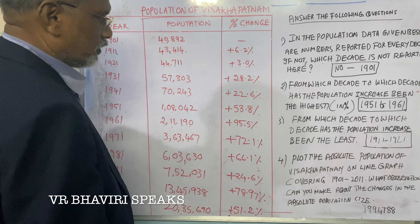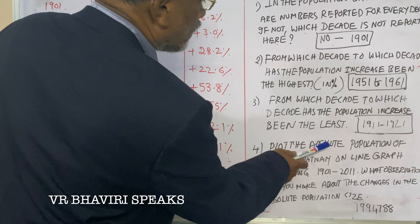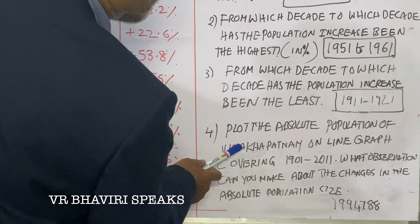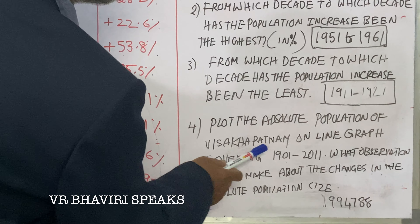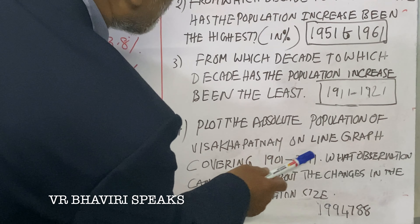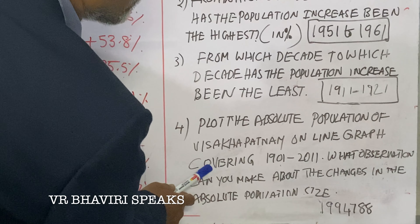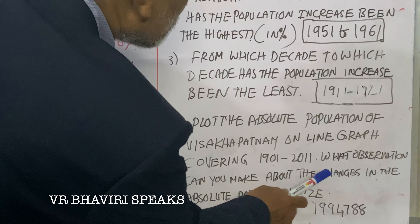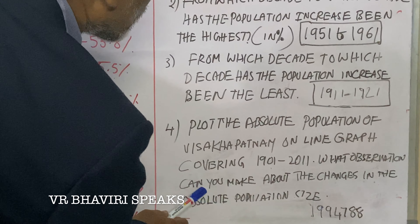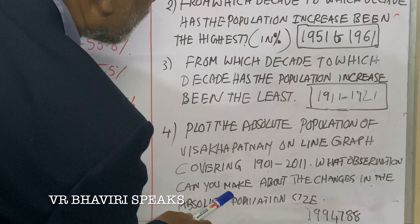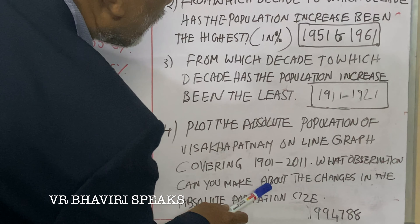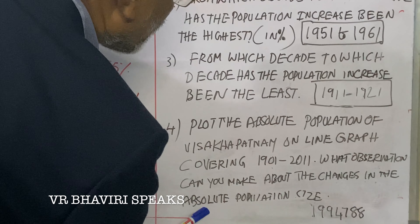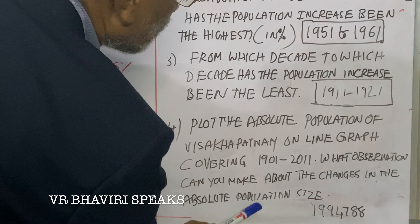Question four: plot the absolute population of Visakhapatnam on a line graph covering 1901 to 2011. What observations can we make about the changes in the absolute population?